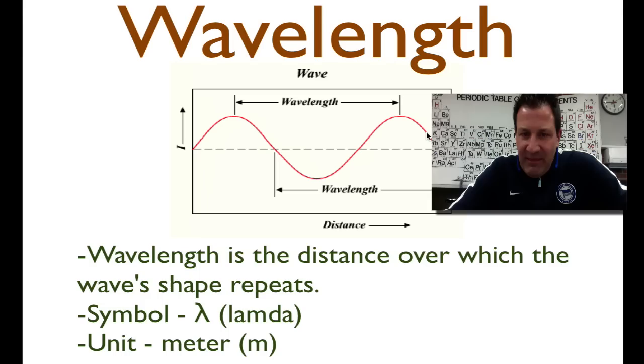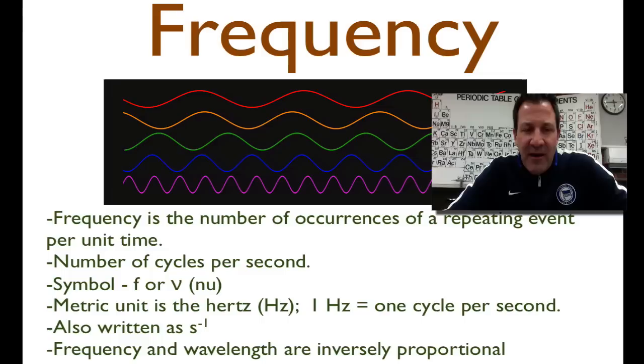Okay, frequency. Frequency, and when you talk about the electromagnetic spectrum, we usually just say it's the number of cycles per second. It's the number of wavelengths that go by a given point in a given unit of time, and it's usually the number of cycles in a second. Okay? So this is the definition, cycles per second. It has a symbol F.